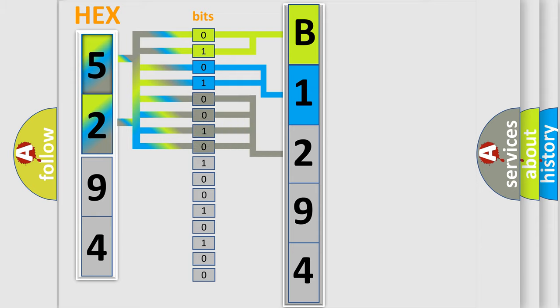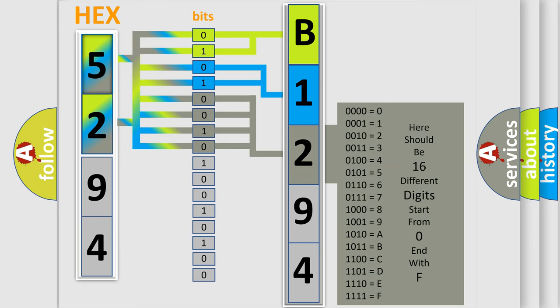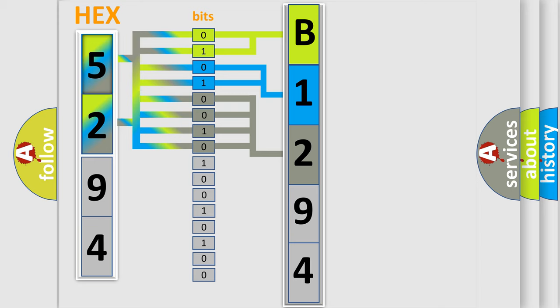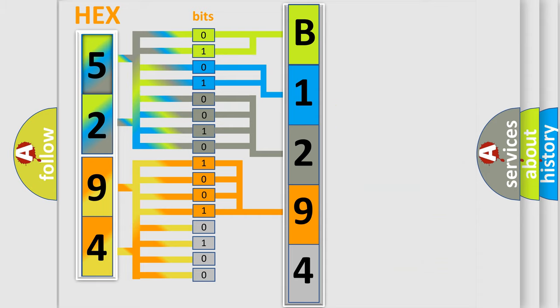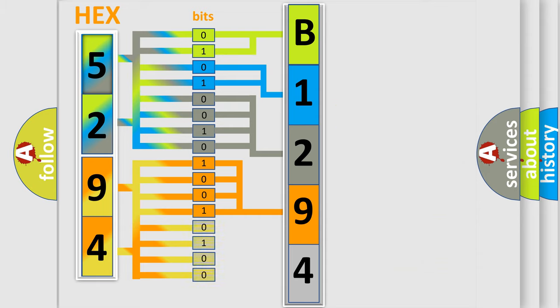The last four bits of the first byte define the third character of the code. The second byte is composed of a combination of eight bits. The first four bits determine the fourth character of the code, and the combination of the last four bits defines the fifth character.